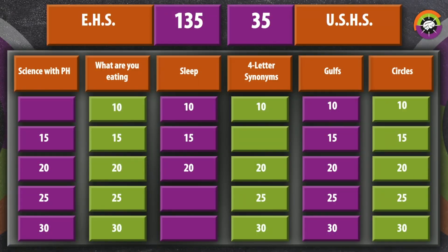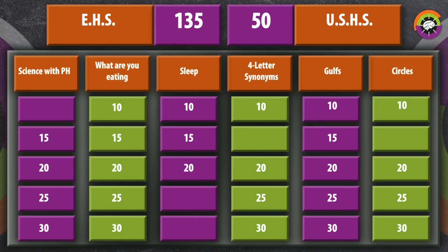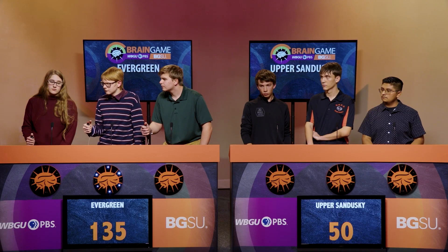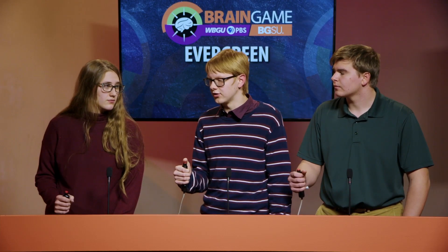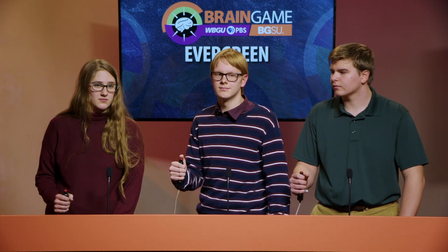Upper Sandusky selects Circles for 15 points. How many degrees are in a circle? Upper Sandusky buzzes in — Daniel answers 360, which is correct. Upper Sandusky in control. Circles for 20 points — what name is given to one half of a circle? Evergreen buzzes in — Caleb answers 'a semicircle,' which is correct. Evergreen takes back control.